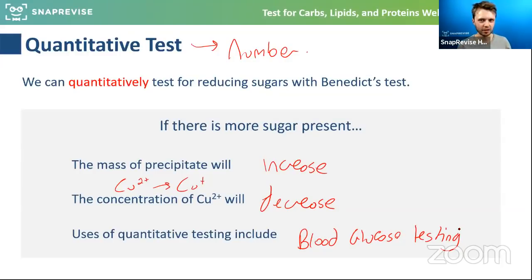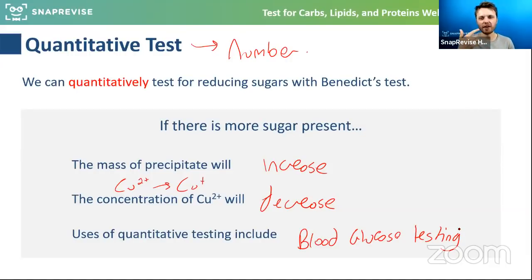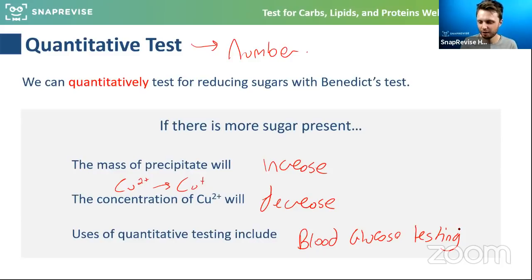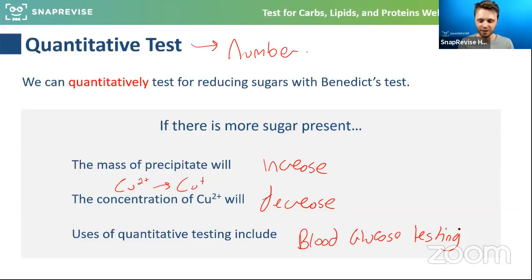This is why quantitative testing matters — you can see if someone has a later stage of diabetes or an initial stage. Interestingly, back in the day doctors used to test for diabetes by tasting a patient's urine — if it tasted sweet, the patient had diabetes because they were peeing out glucose. That was the method before modern testing existed.